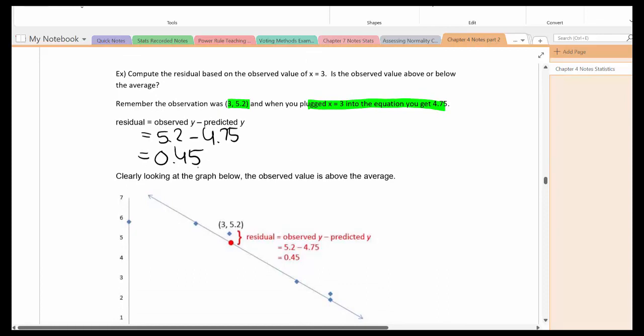So clearly the observed value is above the average. And we know it's going to be above the average because the residual is positive.